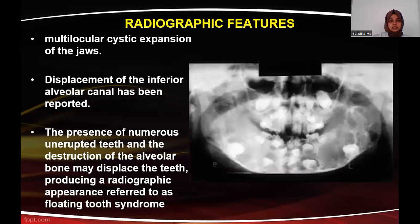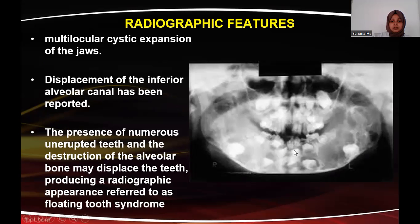The radiographic features are the diagnostic investigations done in cherubic patients. There is multilocular cystic expansion of the jaw — in this picture we can see multilocular radiolucencies on both sides. There is displacement of the inferior alveolar canal and the presence of numerous unerupted teeth. This characteristic feature gives rise to the name 'floating tooth syndrome,' where multiple unerupted teeth are seen within the radiolucencies.